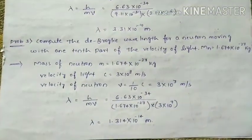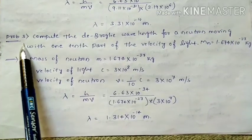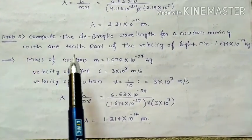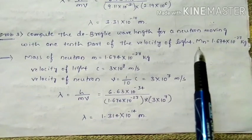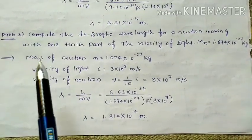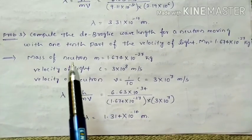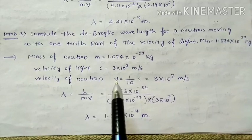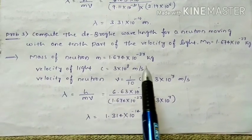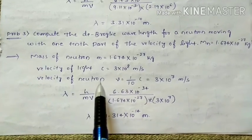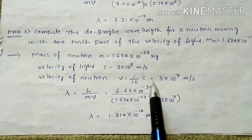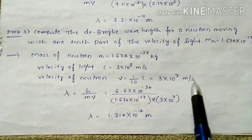Now for the third problem: compute the de Broglie wavelength for a neutron moving with one-tenth the velocity of light. The mass of the neutron is 1.674×10⁻²⁷ kg. Since the velocity of light is 3×10⁸ m/s, one-tenth of that gives the neutron's velocity as 3×10⁷ m/s.